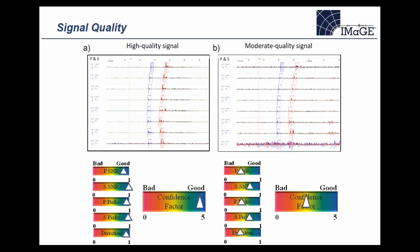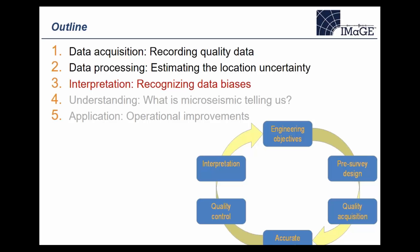Signal quality should tie into the error ellipsoid — for a more moderate quality signal, it's more difficult to accurately identify the arrival time, particularly on the lowest sensor, due to increased noise. Also shown in blue are the polarization directions of the P-wave, and for a low-quality event there's a lot of scatter in the direction of arrival due to the noise impact. It's important to have an attribute that quantifies signal quality so you can use the highest quality data in the interpretation.